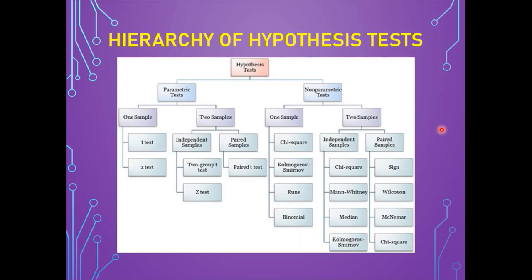Several tests can be used for one-sample and two-sample parametric and non-parametric tests. Some tests are equivalent counterparts: instead of the independent sample t-test, the Mann-Whitney test can be used for non-parametric data. Similarly, the Wilcoxon signed-rank test can replace the paired sample t-test, the Kruskal-Wallis test can replace one-way analysis of variance, and Friedman's ANOVA can replace one-way repeated measures analysis of variance.